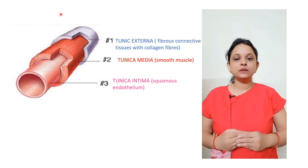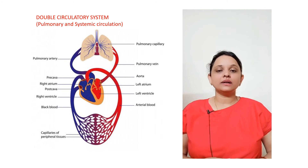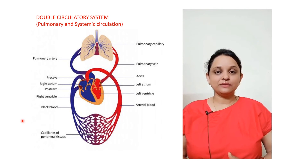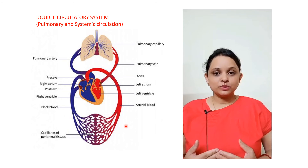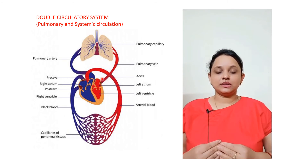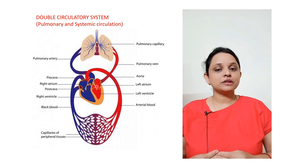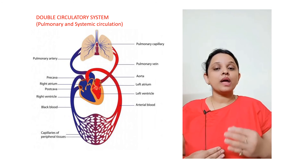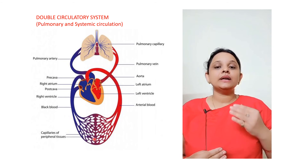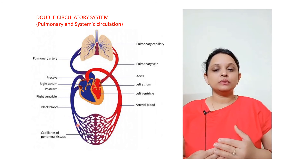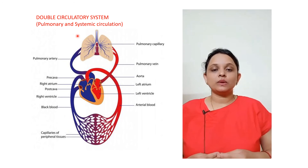The main function of our heart is to collect deoxygenated blood from all over the body parts and organs. This deoxygenated blood goes to the lungs where it gets oxygenated. This oxygenated blood comes back to the heart — this is called pulmonary circulation. The oxygenated blood is then pumped via the heart to the body organs where they receive nutrients and oxygen.